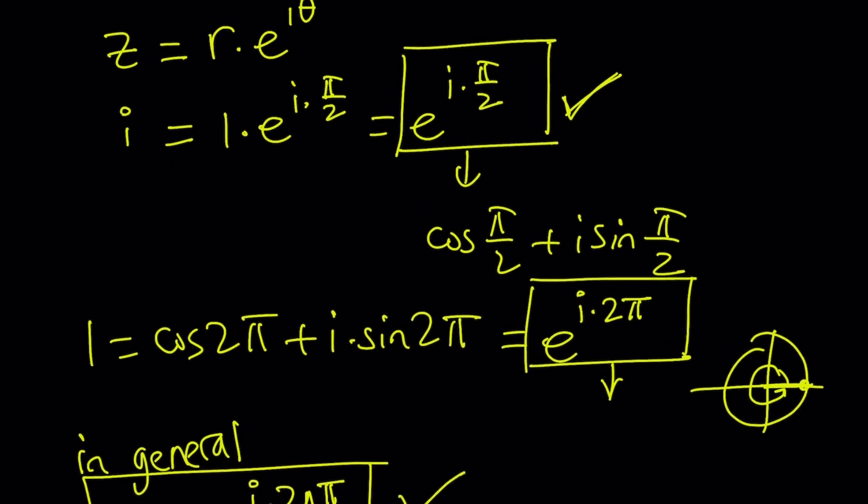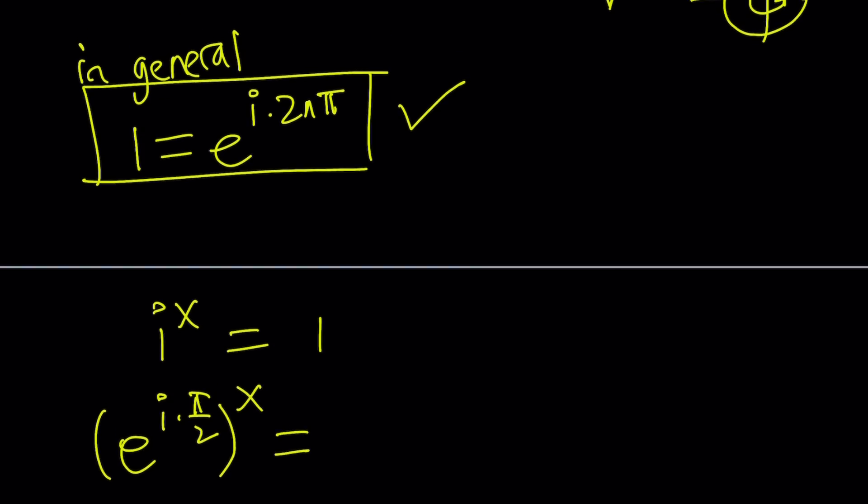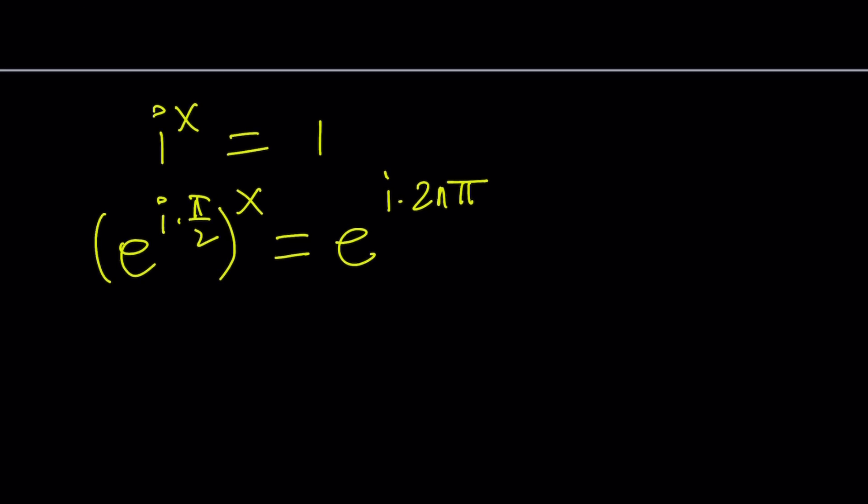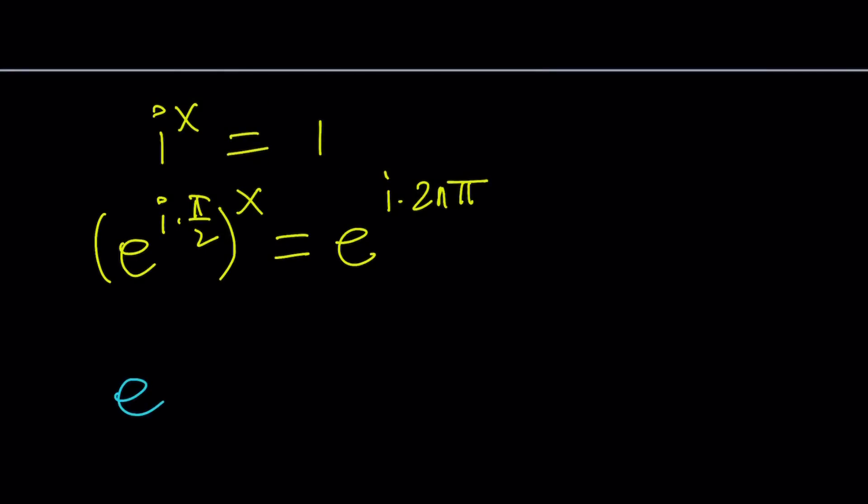So let's go ahead and do the replacements. i will be replaced with e to the power i times pi over 2. And then of course, you have to raise it to the power x. And 1 will be replaced with e to the power i times 2 n pi. 2 n pi represents multiples of 2 pi. Now let's go ahead and see if we can find the x value from here.